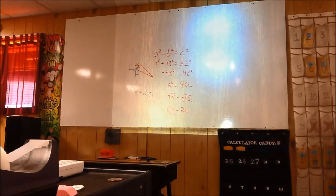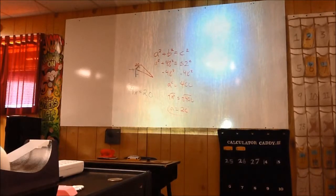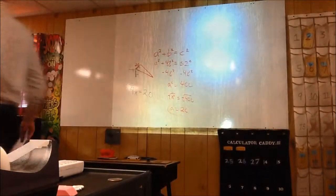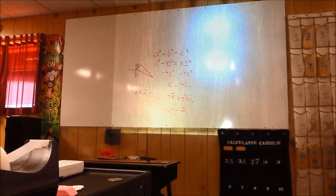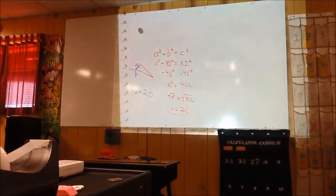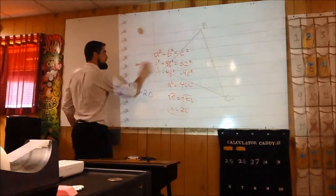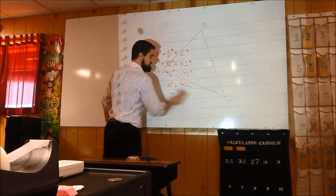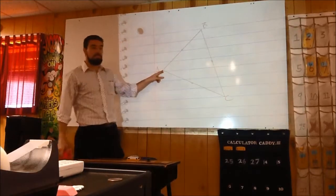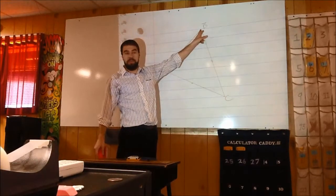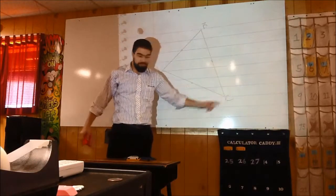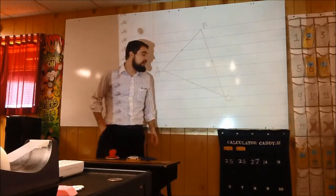We're all going to label this triangle the same exact way. The vertex on the far left, we're going to call that point A. Up to the right from there, we're going to call that point B. And then below to the right, we're going to call that C.